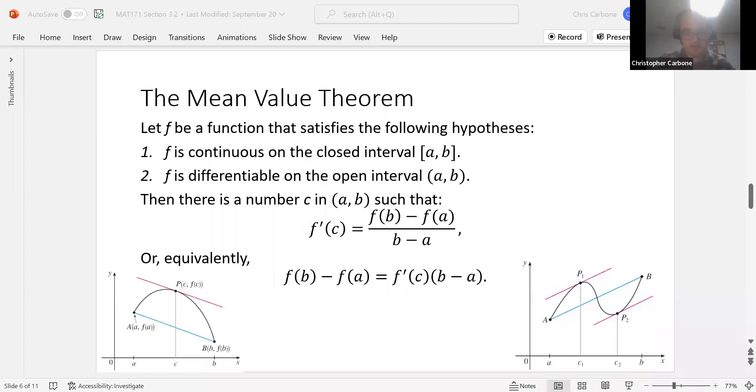To continue with section 3.2 and the Mean Value Theorem, this is part 2. The Mean Value Theorem specifically says that f be a function that satisfies these hypotheses: f is continuous on the closed interval [a,b], and f is differentiable on the open interval (a,b).